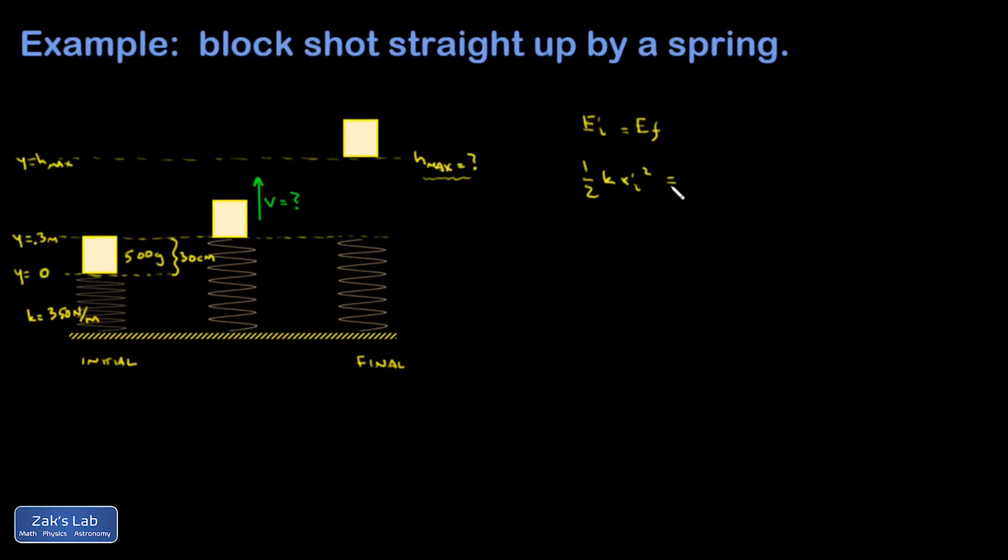In the final state, my spring is uncoiled, so there's no energy there. I do have gravitational potential energy, and then I'm at my maximum height, which means v is 0, so there's no kinetic energy. So the only survivor here is my gravitational potential energy. Again, this is fine to write it down this way as long as you're arguing with yourself about why the terms that vanish should vanish.